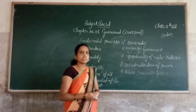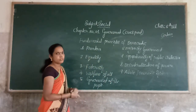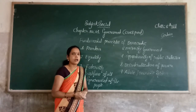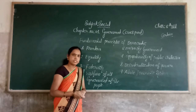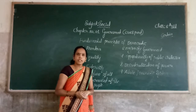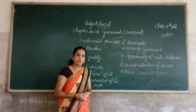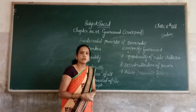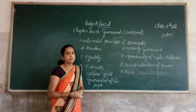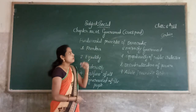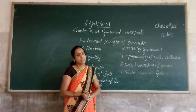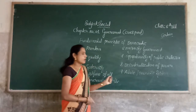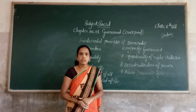In the next class we will discuss the fundamental principles of democratic government one by one. Today we discussed the meaning of government, types of government, meaning of democratic type of government, three organs of democratic type of government, and the fundamental principles of democratic government. OK children, are you understand? Thank you.